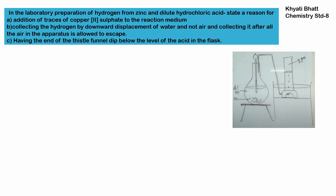The question is about the laboratory preparation of hydrogen from zinc and dilute hydrochloric acid. In this reaction, the reactants are zinc and hydrochloric acid, and as products we get zinc chloride and hydrogen gas.